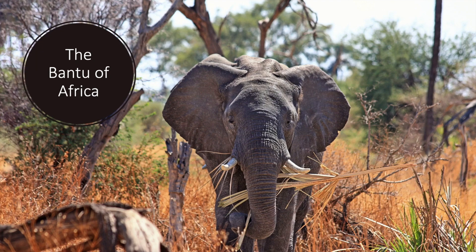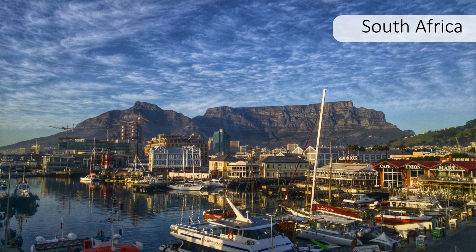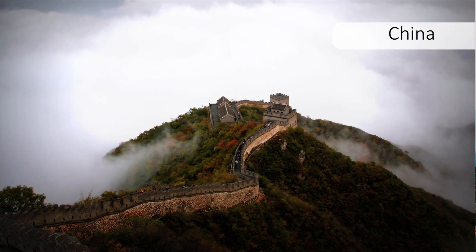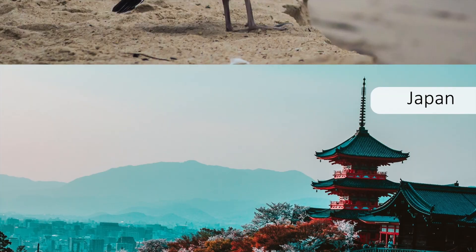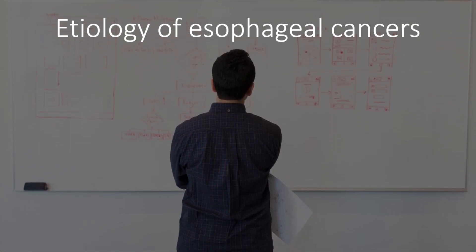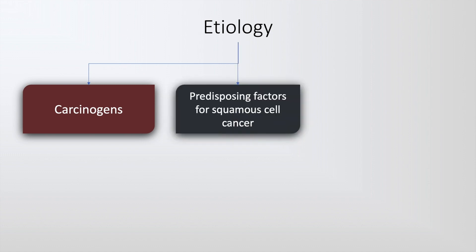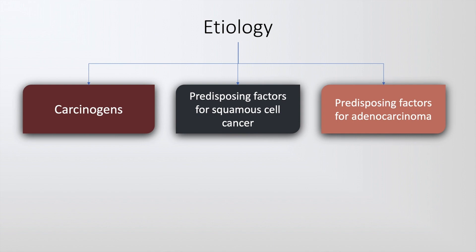This is prevalent in the Bantu region of Africa but is also seen in South Africa, China, Japan and the Caspian region. Let's now discuss the etiological factors causing carcinoma of the esophagus, and these may be studied under carcinogens, factors predisposing to squamous cell cancer, and factors predisposing to adenocarcinoma.